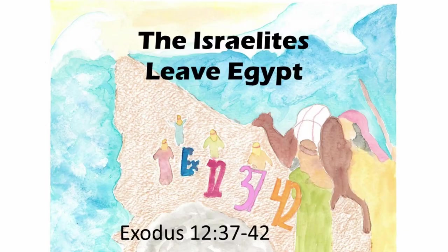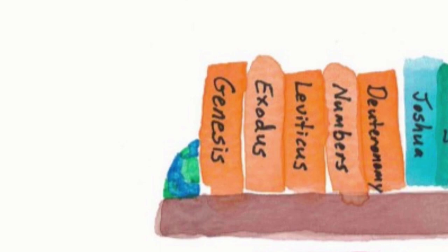Attention. Present Bibles. The Israelites Leave Egypt. Start. The Israelites Leave Egypt is found in Exodus 12:37-42. Genesis, Exodus, Leviticus.